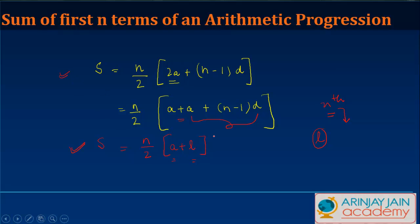So the sum of an AP can also be found if we know a and the last term l. The first formula uses a and d; the second uses a and l. I hope the concept is clear — understanding this will help you through all your examinations. If you like this video, hit the like button, and you can also subscribe. Thank you for being with us today.